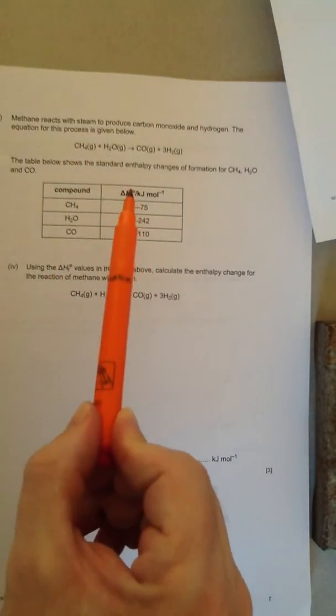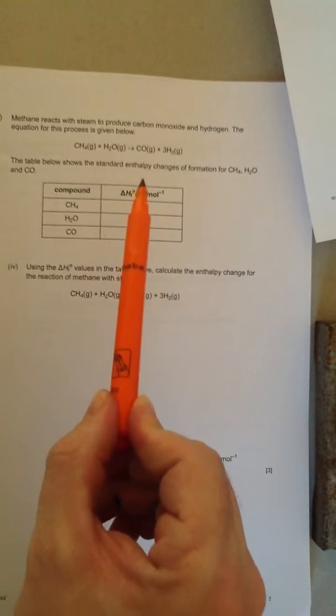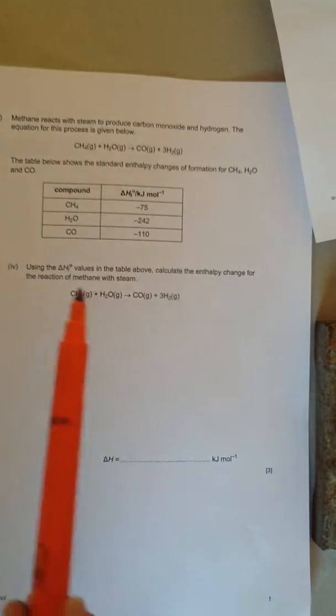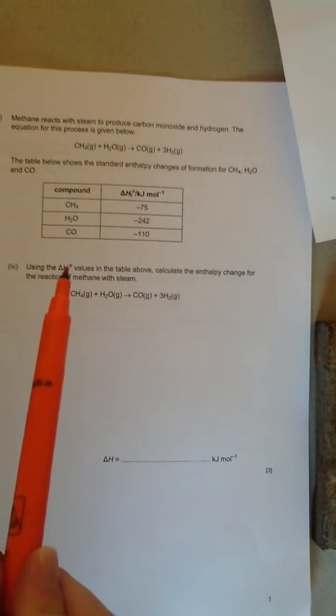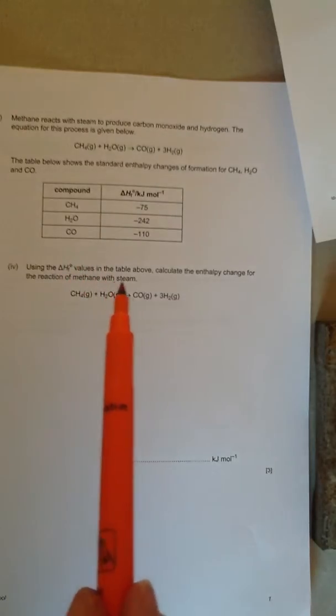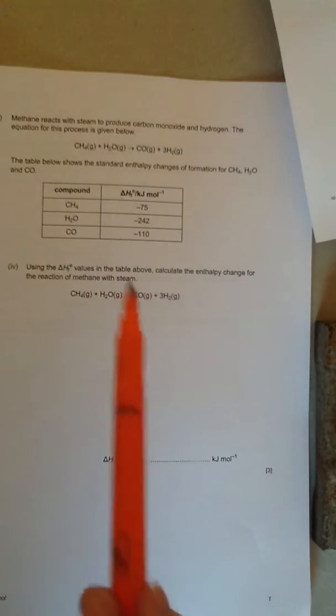If you look at the table, it says delta H naught F, that's the standard enthalpy of formations. The question is asking you to use the delta H naught F, the standard enthalpy of formation values, to calculate the enthalpy change for the reaction of methane with steam.